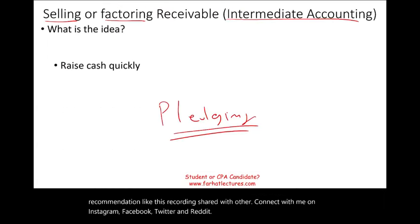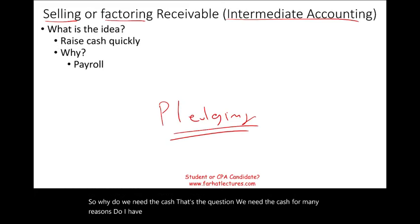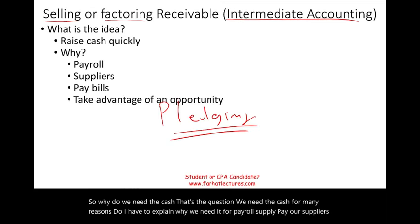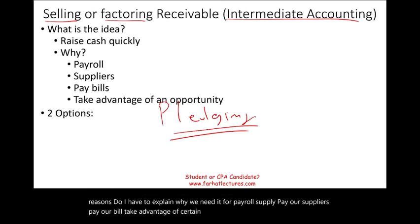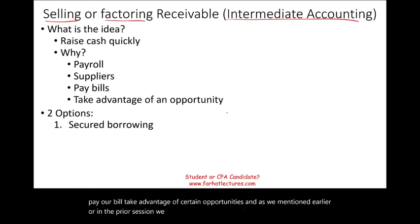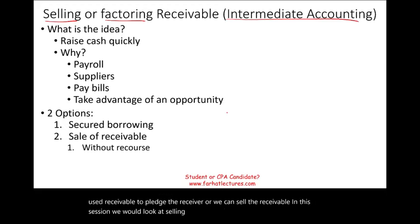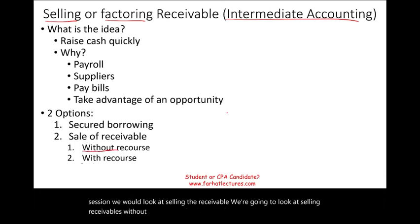So why do we need the cash? We need it for payroll, to pay our suppliers, pay our bills, and take advantage of certain opportunities. As mentioned in the prior session, we have two options: we can have a secured borrowing and use the receivable as a pledge, or we can sell the receivable. In this session, we would look at selling the receivable — both without recourse and with recourse.